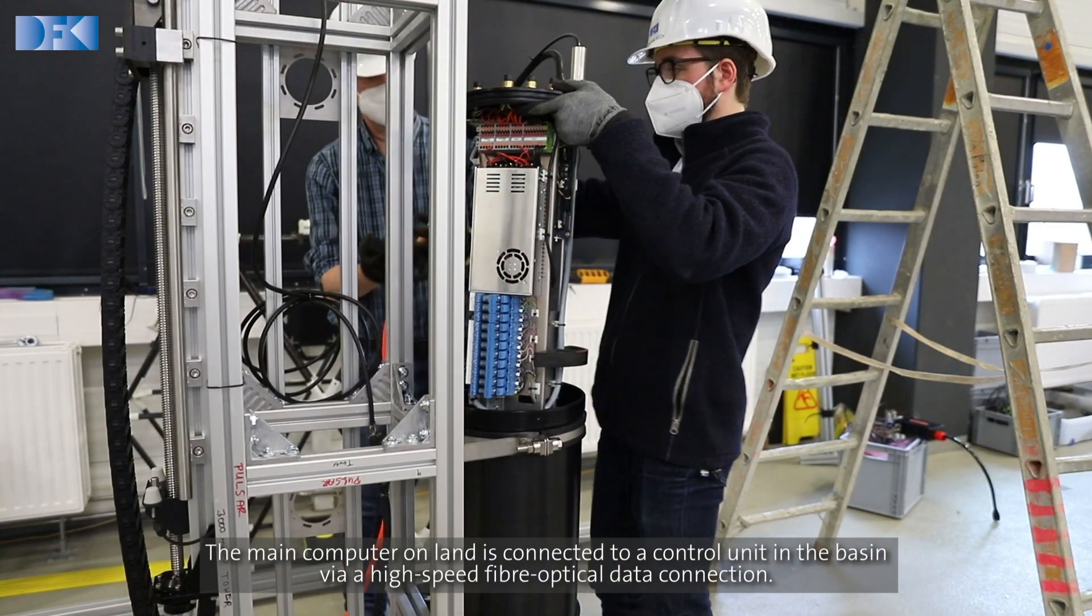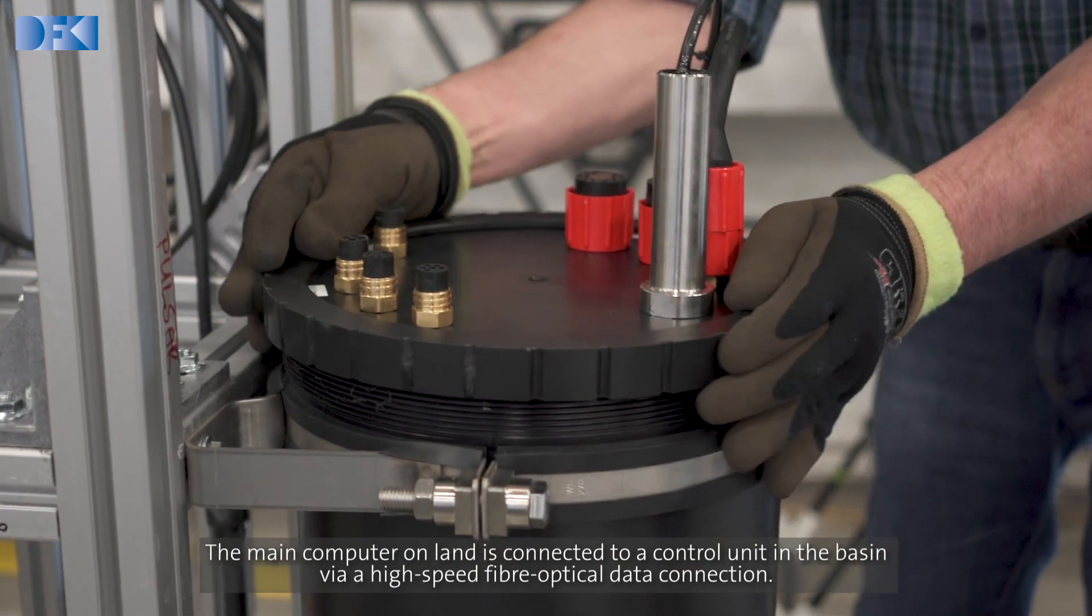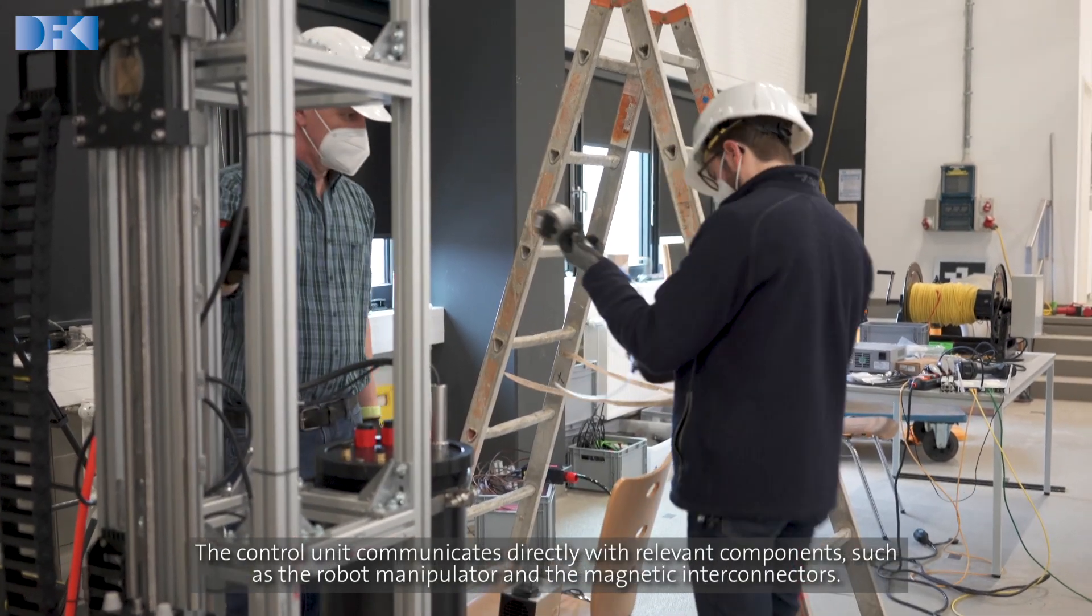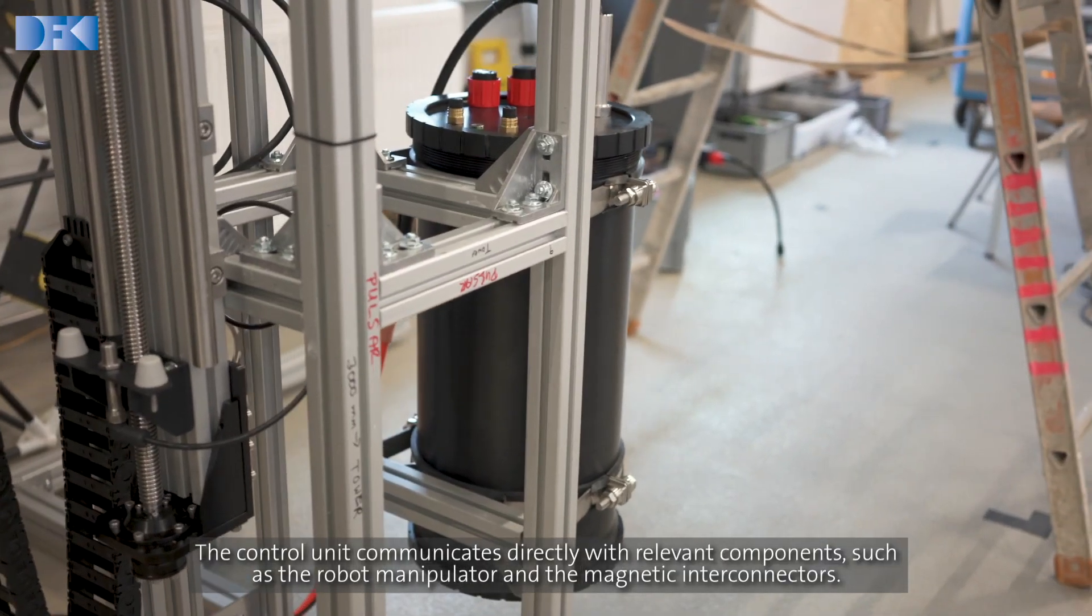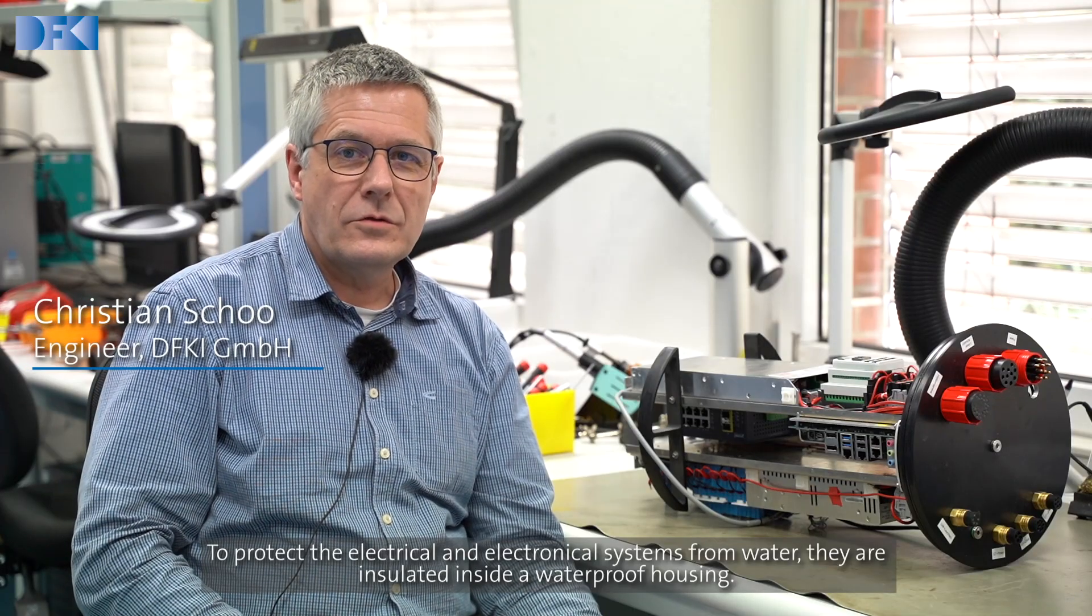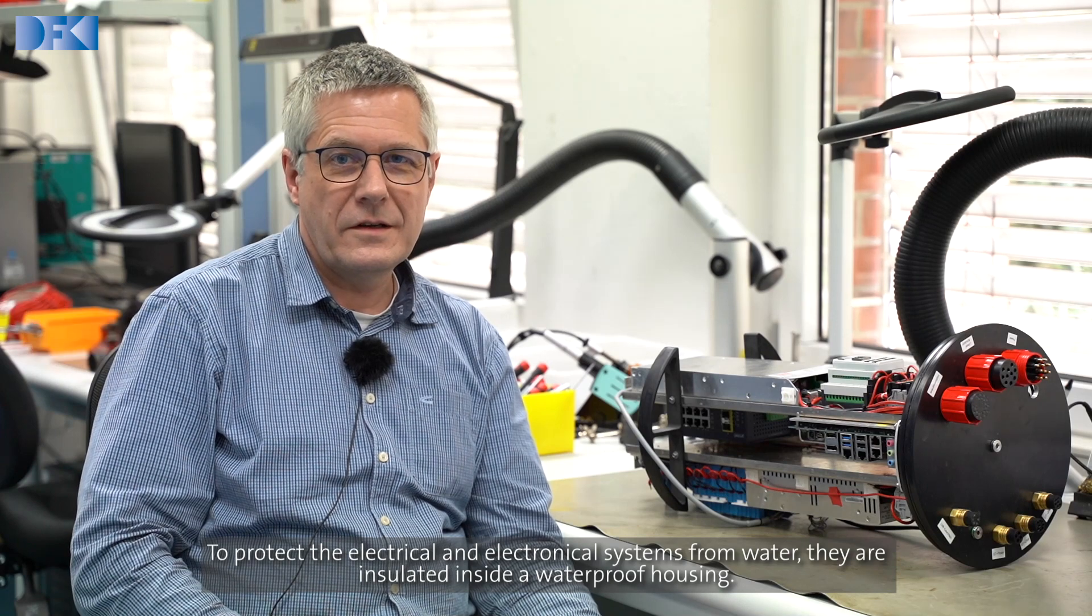The main computer is connected with high-speed data connections to important components such as the manipulator and the magnetic connector. All electrical and electronic components must be protected from water and are therefore in waterproof housing.